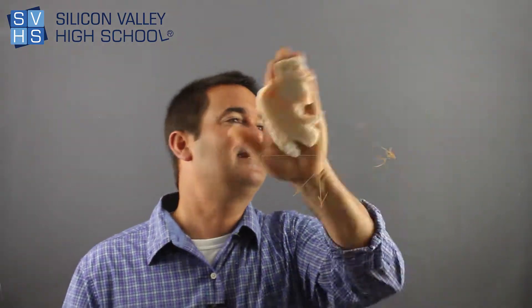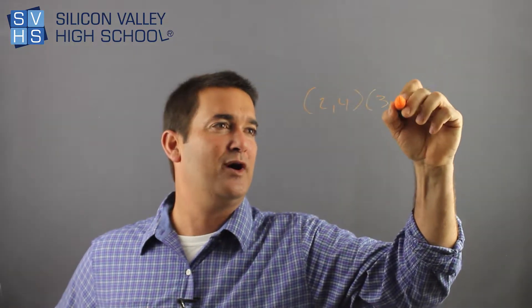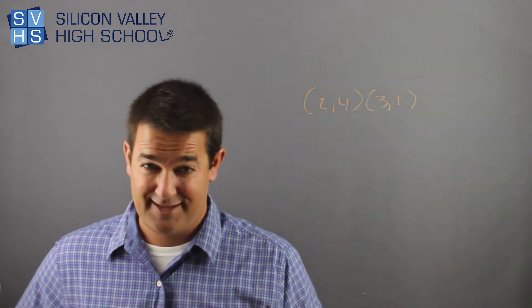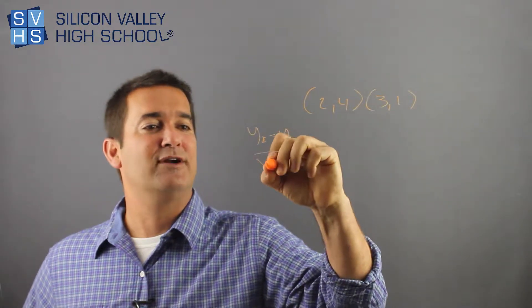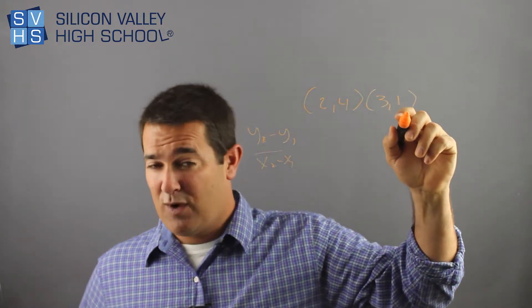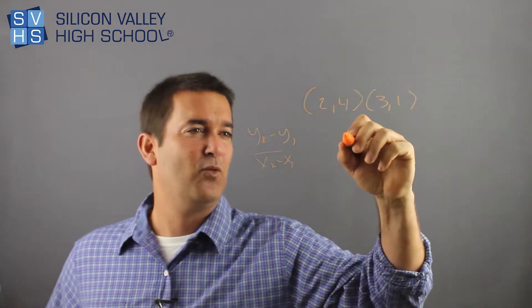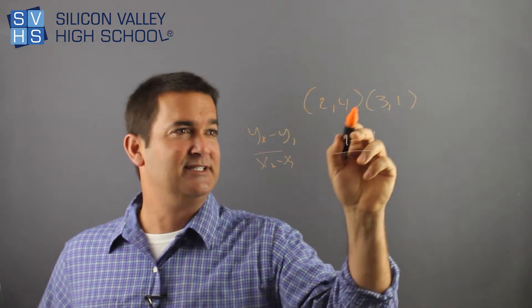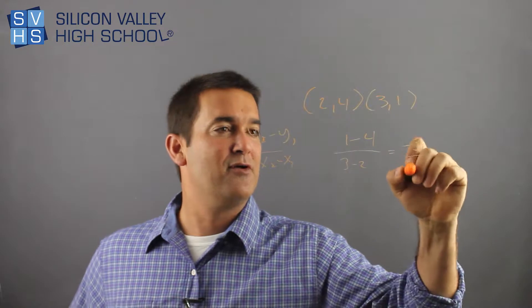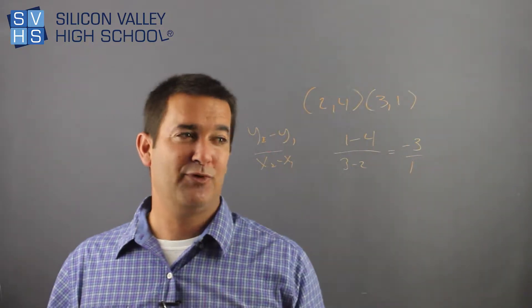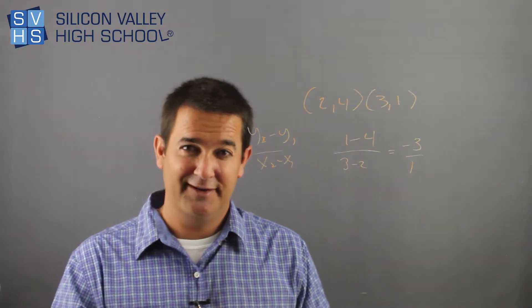So let's do a couple little practice problems that might come up in your class. They might say something like this. Find the slope. So we'll do these really quick. You'll have 2, 4, and maybe 3, 1. And you remember that the slope formula is y2 minus y1 over x2 minus x1. It just means second y minus the first y, 1 minus 4, over the second x minus the first x, 3 minus 2. This would be negative 3 over 1. Done. What's the slope between these two points? Negative 3 over 1. So that's a negative.